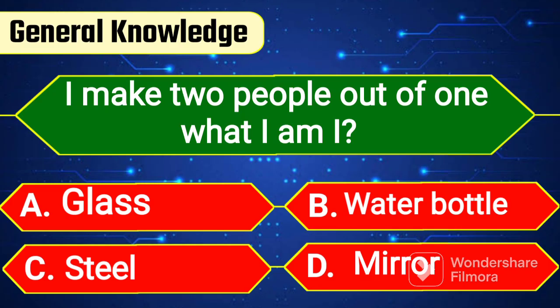I make two people out of one — what am I? Option A: Glass. Option B: Water bottle. Option C: Steel. Option D: Mirror.